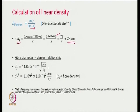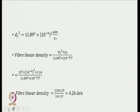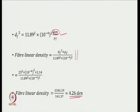Using the fiber diameter-denier relationship which has been stated, we can find out what should be the diameter squared. We rewrite the same equations, substitute the values, and get the fiber linear density in terms of denier. In this case we need to use a fiber denier of 4.26.